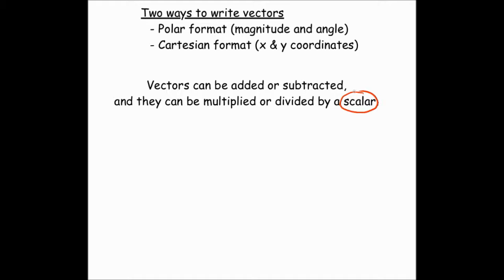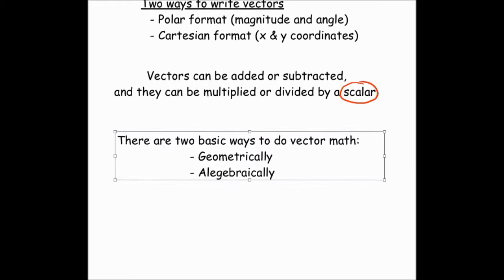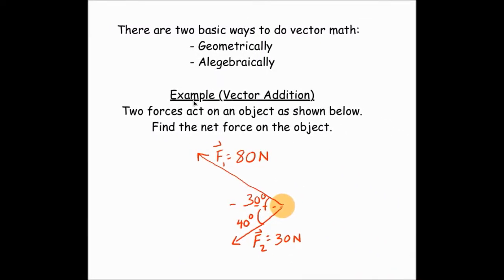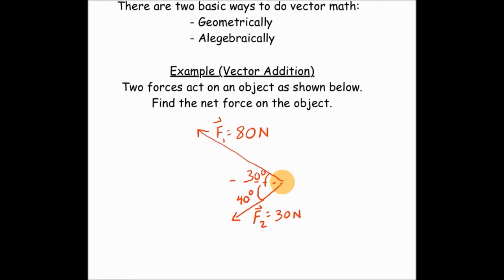There are two basic ways to do vector math. Geometrically and algebraically. Okay, so let's try an example. In this example, we have an object with two forces on it, and we want to find the net force. So in other words, we want to find F1 plus F2.